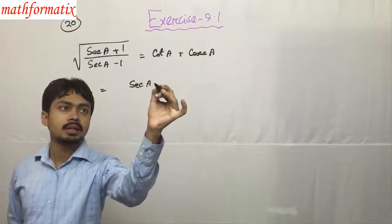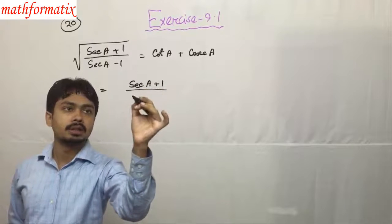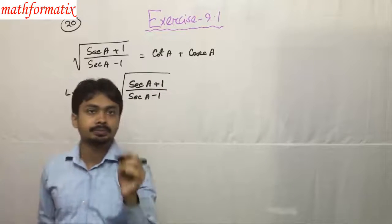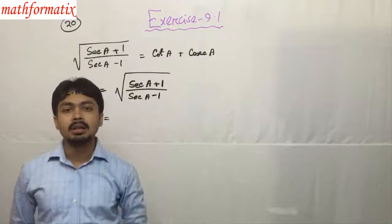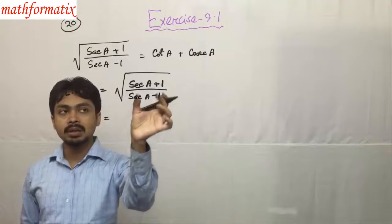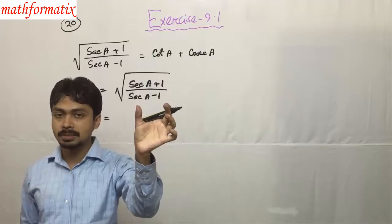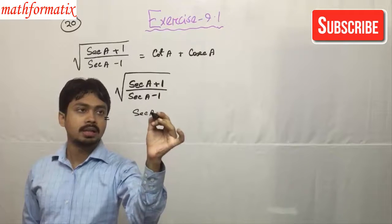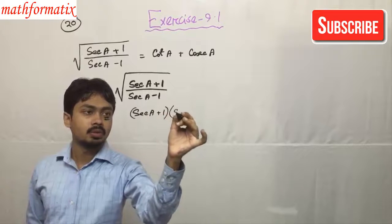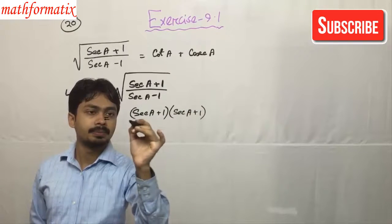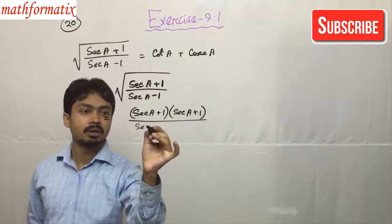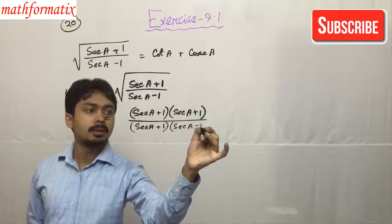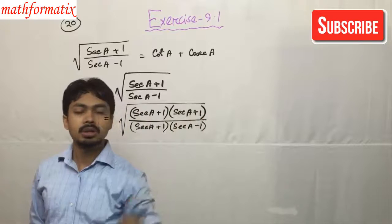x_{k+1} divided by c_k, minus 1 divided by c_k, plus 1 divided by c_k. Then c_{k+1} divided by c_k, plus 1 divided by c_k... equals c_{k-1}, 4 to 3, 4.